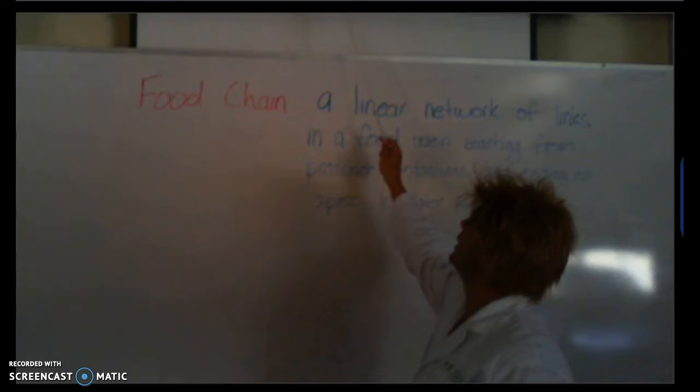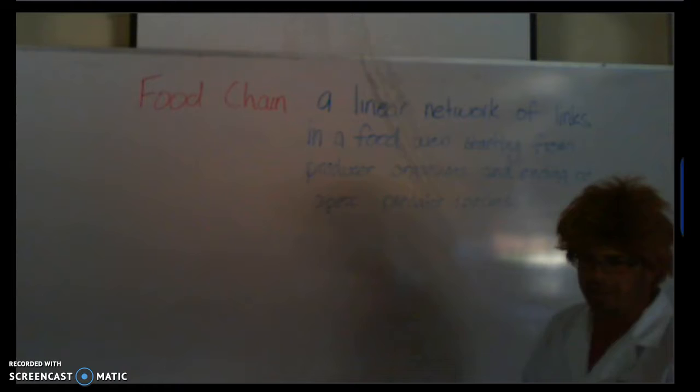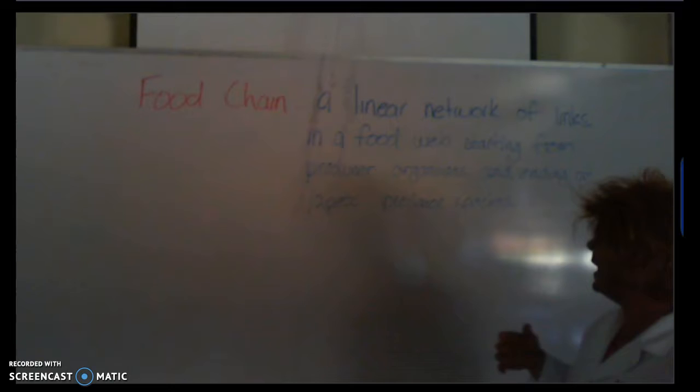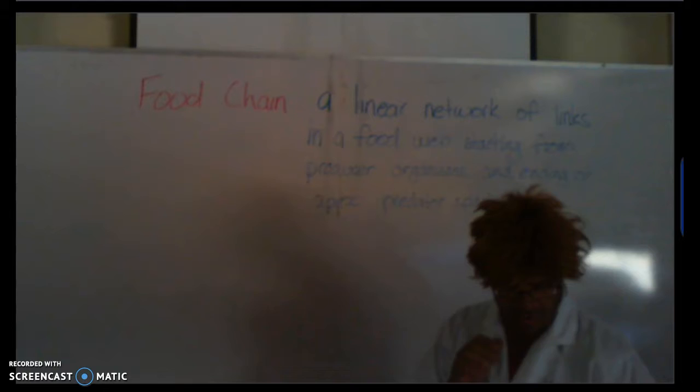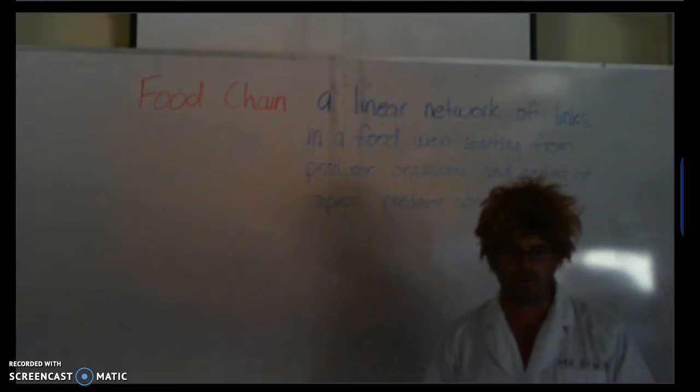A food chain is a linear network of links in a food web starting from producer organisms and ending at apex predator species. The snake we saw there, even though it's giving that person trouble, is not the apex predator in the ecosystem from that movie. I'll bring up an image of a food chain in a second.